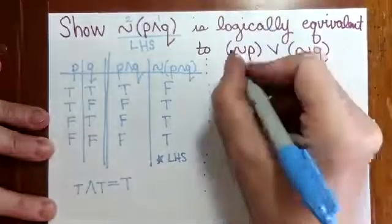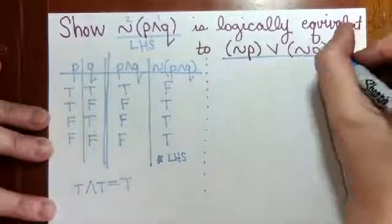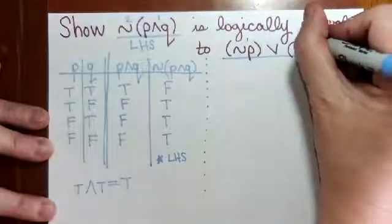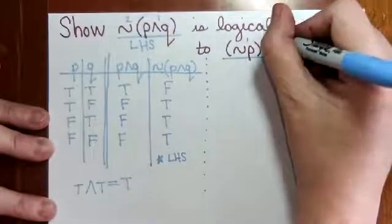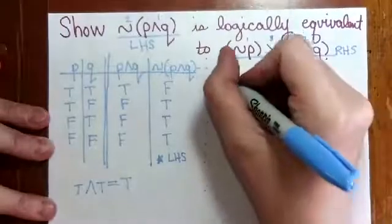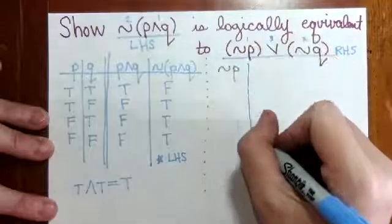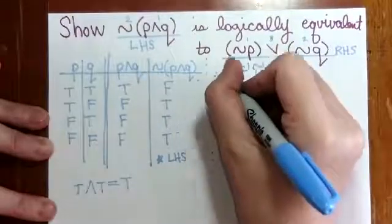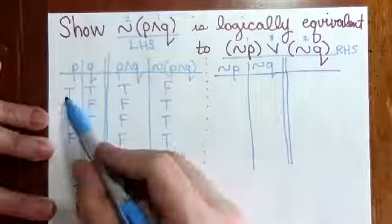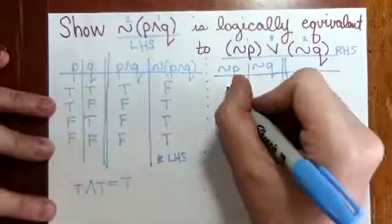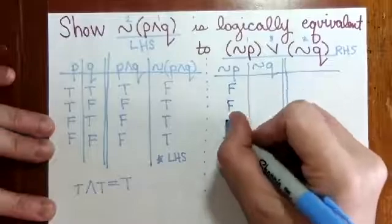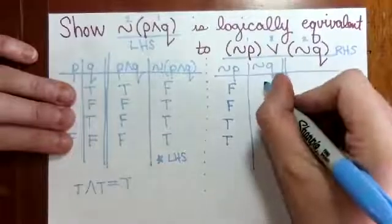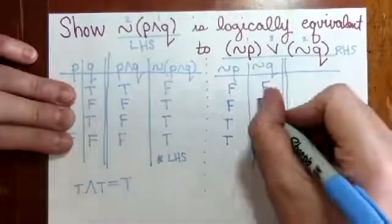In the right-hand side, what we can do is first negate P, then negate Q, and then we can OR them. So NOT P and a NOT Q column. Looking at P, we negate the column by turning the Ts to Fs and the Fs to Ts. And to negate Q, we look at the Q column, turn the Ts to Fs and the Fs to Ts.